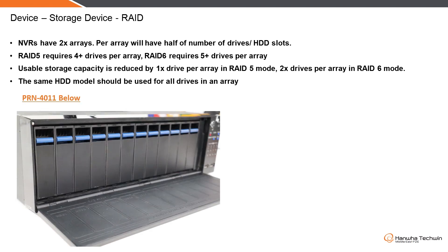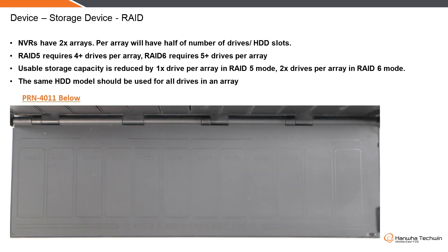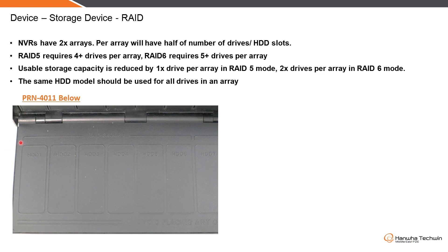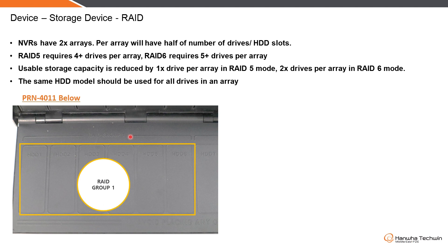Here is an example — I have a PRN with 12 slots. If you open the front panel door you will see that it indicates there are two groups. Focusing on RAID group 1: because it has 12 slots, there are groups of 6 per array, so RAID group 1 has 6 HDD slots.